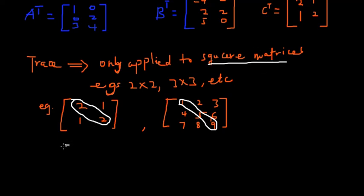So we have trace of this matrix is two plus two giving us four. And then trace of this matrix is also one plus five plus nine, that's fifteen. This brings us to the end of this tutorial video.